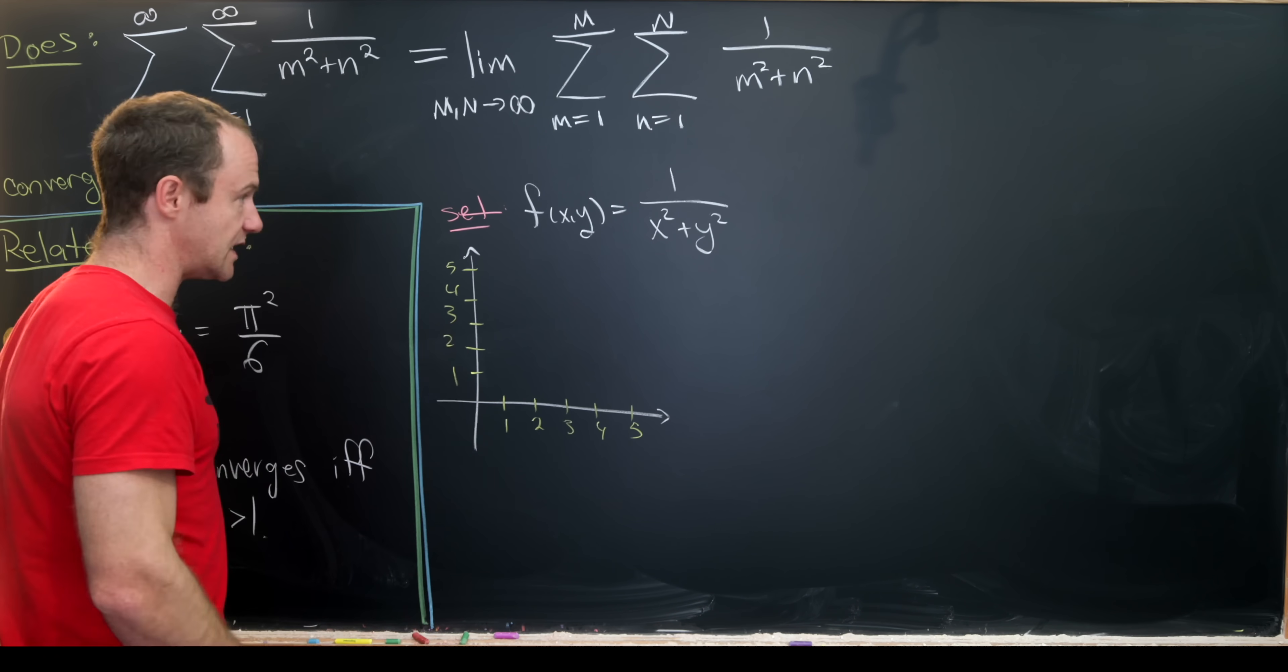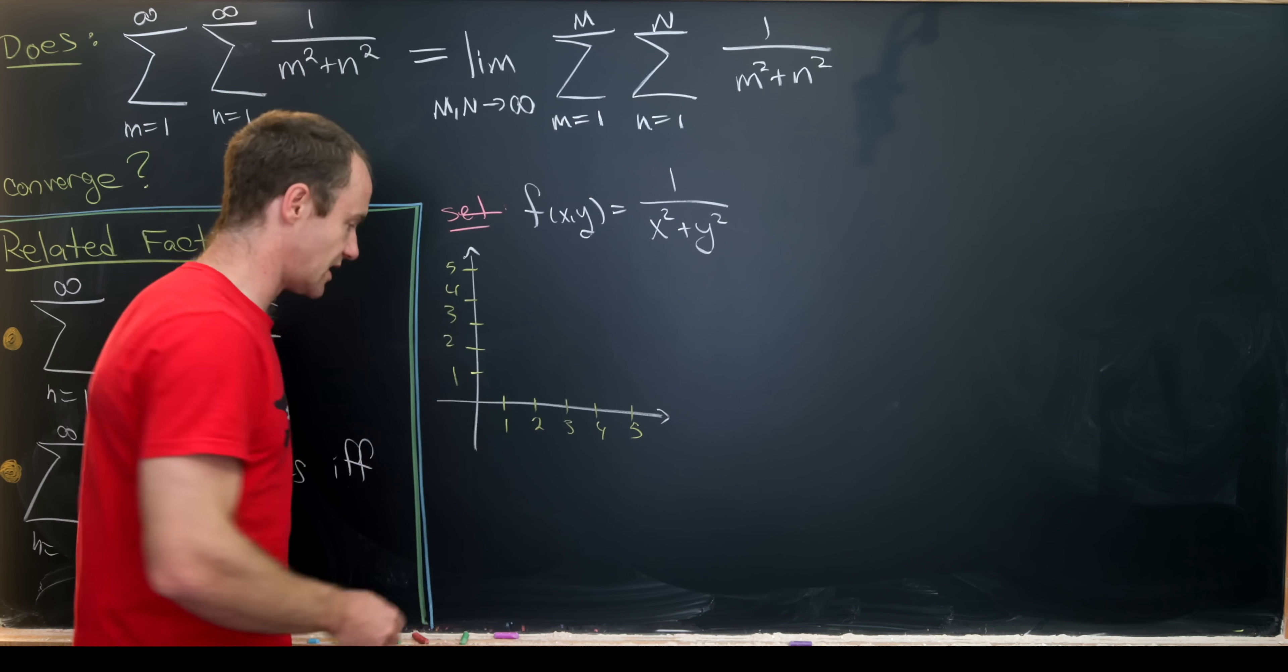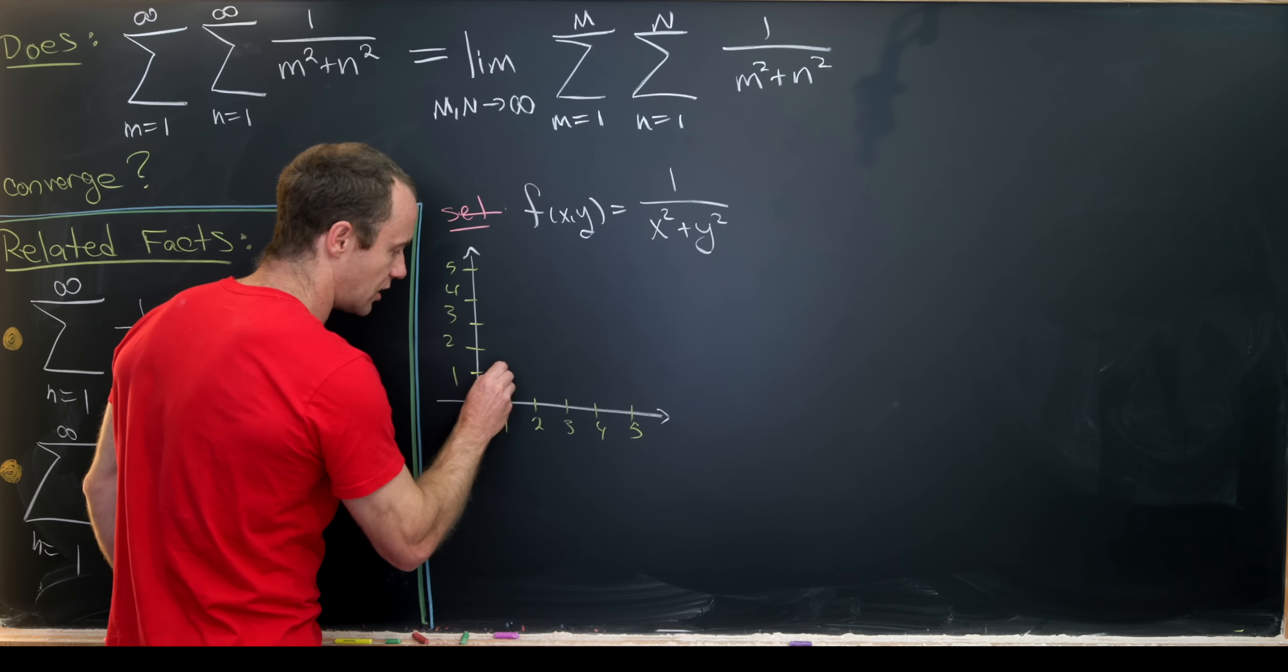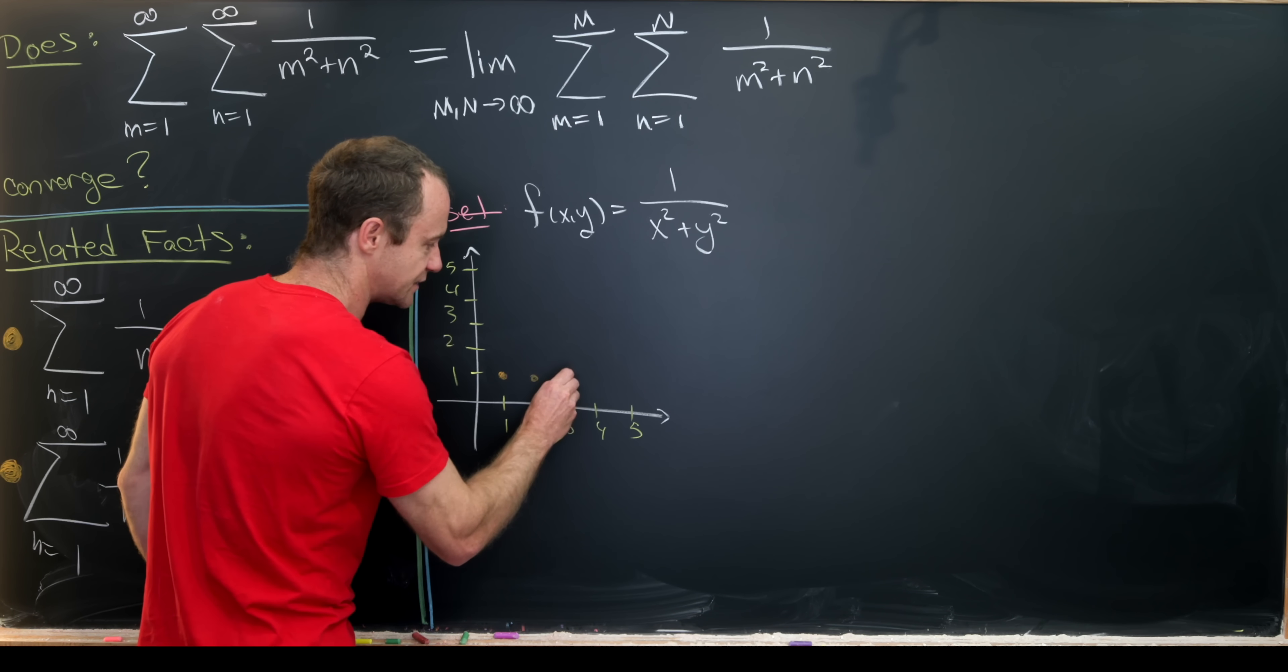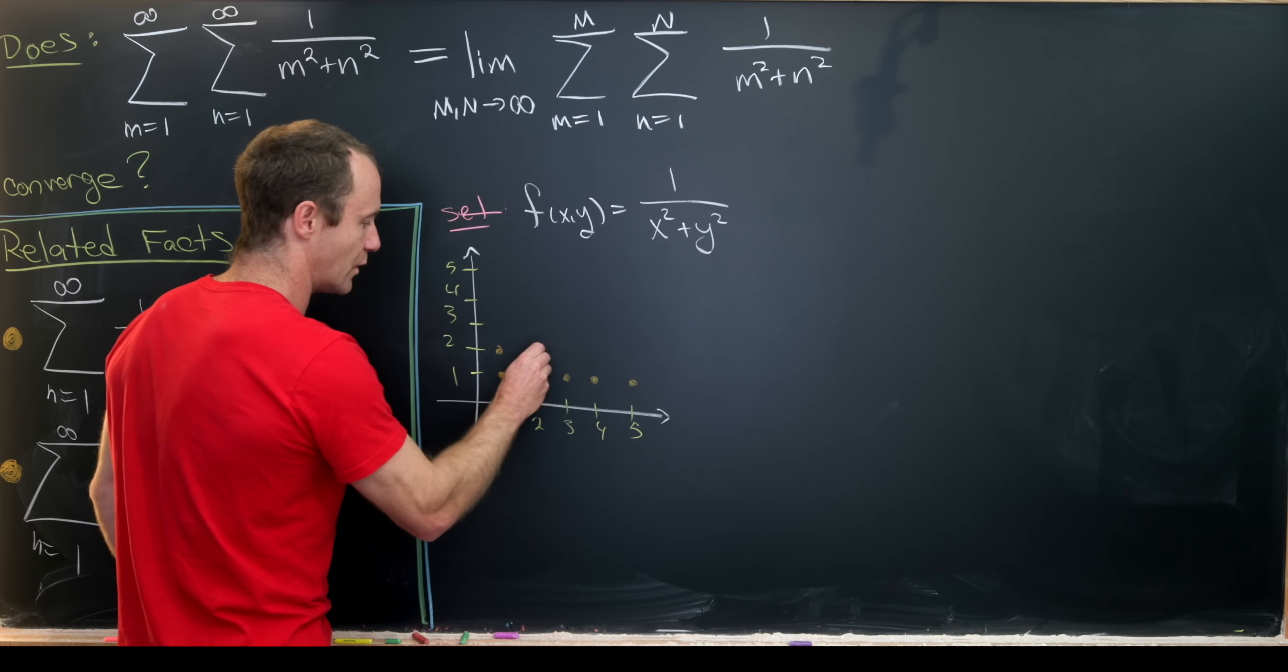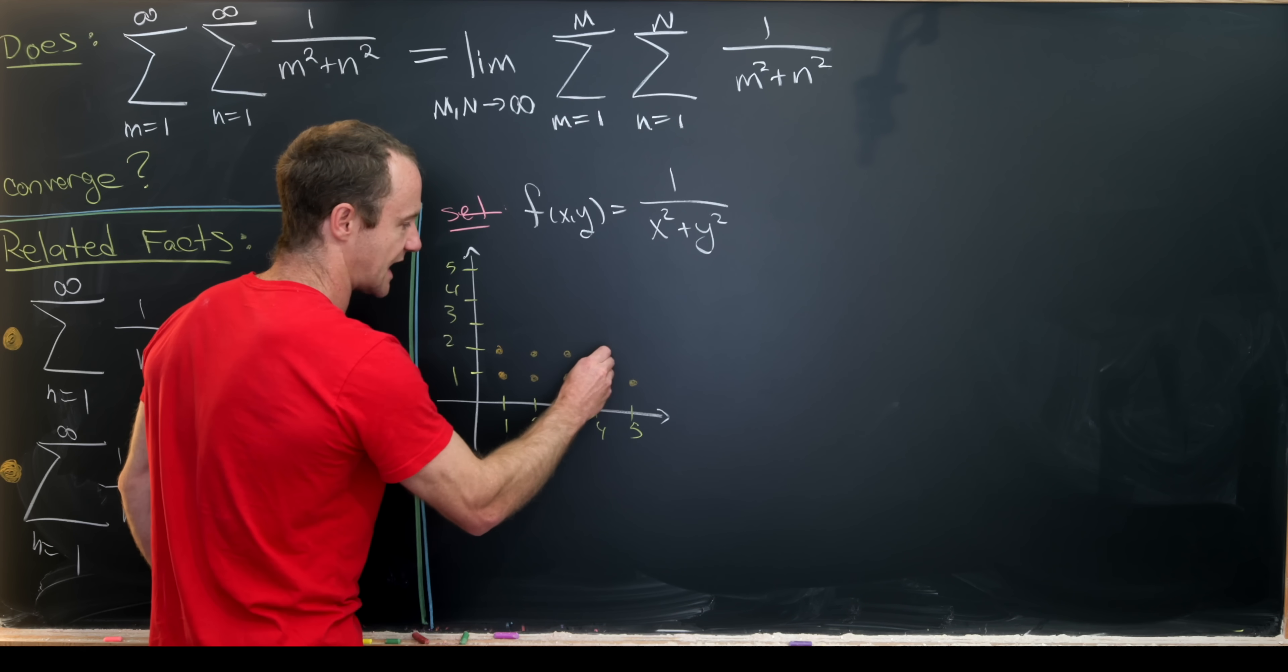And then when we do this double sum, what we're doing is adding up values of this function at all of these so-called lattice points. And so those lattice points are going to be points in this Cartesian coordinate plane where both entries are natural numbers.